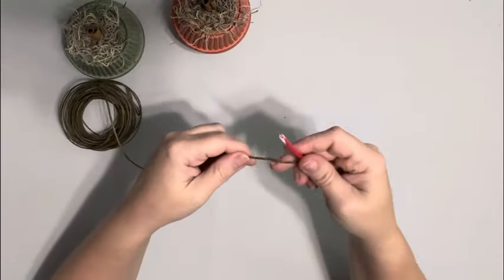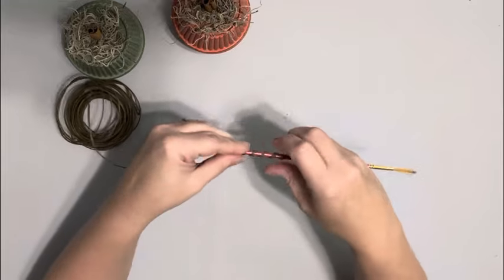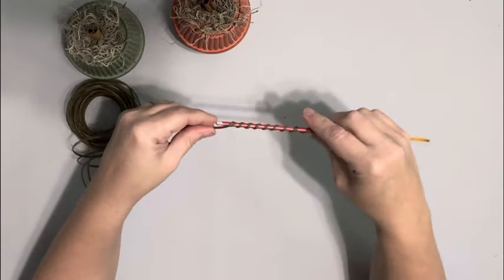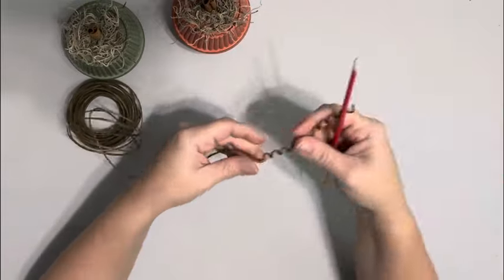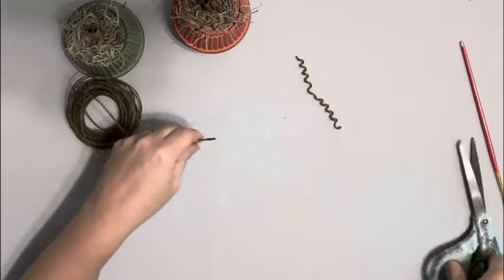I then take some covered wire that I got from Hobby Lobby and I'm just wrapping it a bunch of times around a paintbrush handle. And then cutting that and I make two of those.